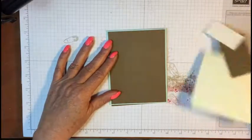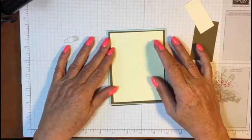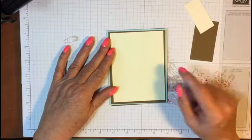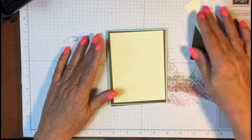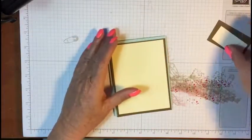This right here is cut at five and a quarter by four, and this right here is cut at three and three-fifths by five.